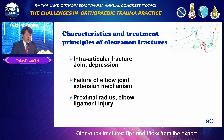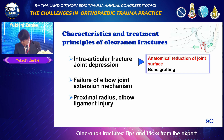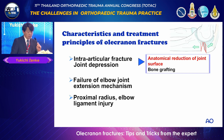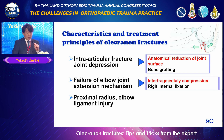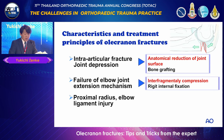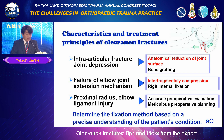Characteristics and treatment principles of olecranon fracture: it is basically an intra-articular fracture with joint depression, so anatomical reduction of the joint is required. Bone grafting is sometimes used. Olecranon fracture also represents failure of the elbow joint extension mechanism, so inter-fragmentary compression and rigid internal fixation with absolute stability are needed. Combined proximal radius and elbow ligament injuries may occur, requiring accurate preoperative evaluation and meticulous preoperative planning to determine the fixation method.